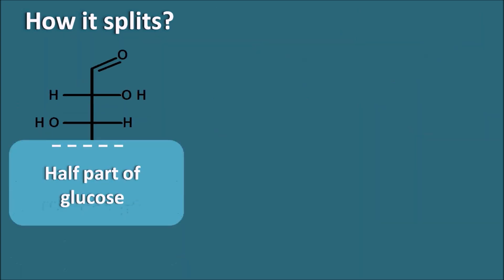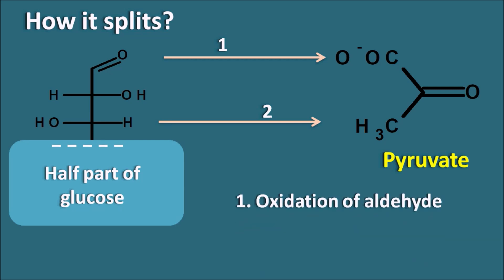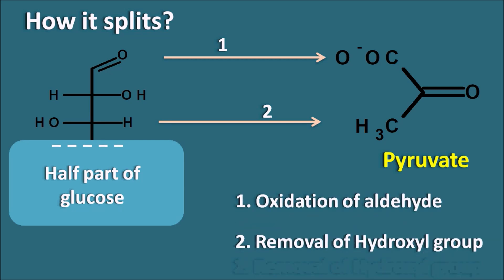Comparing the half part of glucose with pyruvate, two important changes are observed: first, the aldehyde functional group is converted into a carboxylic acid — that is oxidation of the aldehyde. Second, at the third carbon the hydroxyl group is removed, giving CH3. So the two major changes are oxidation of the aldehyde to carboxylic acid, and removal of the hydroxyl group from the third position.